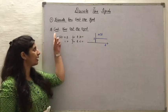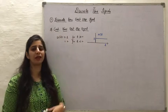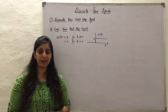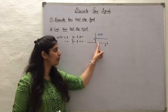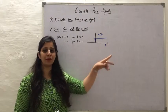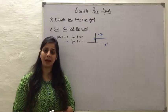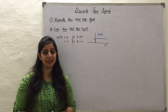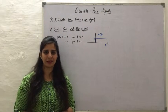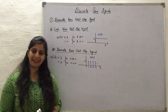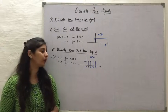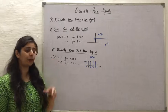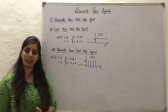A discrete time unit step signal is similar to the continuous time version, with the key difference that values exist only at integer time instances, not for all time instants.